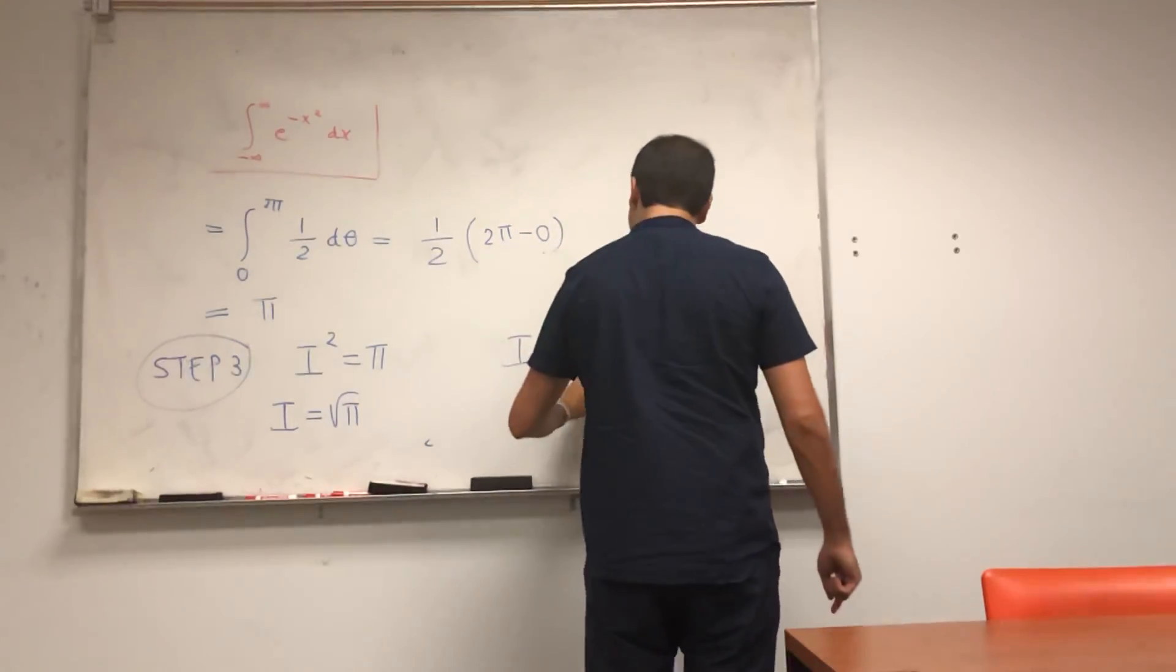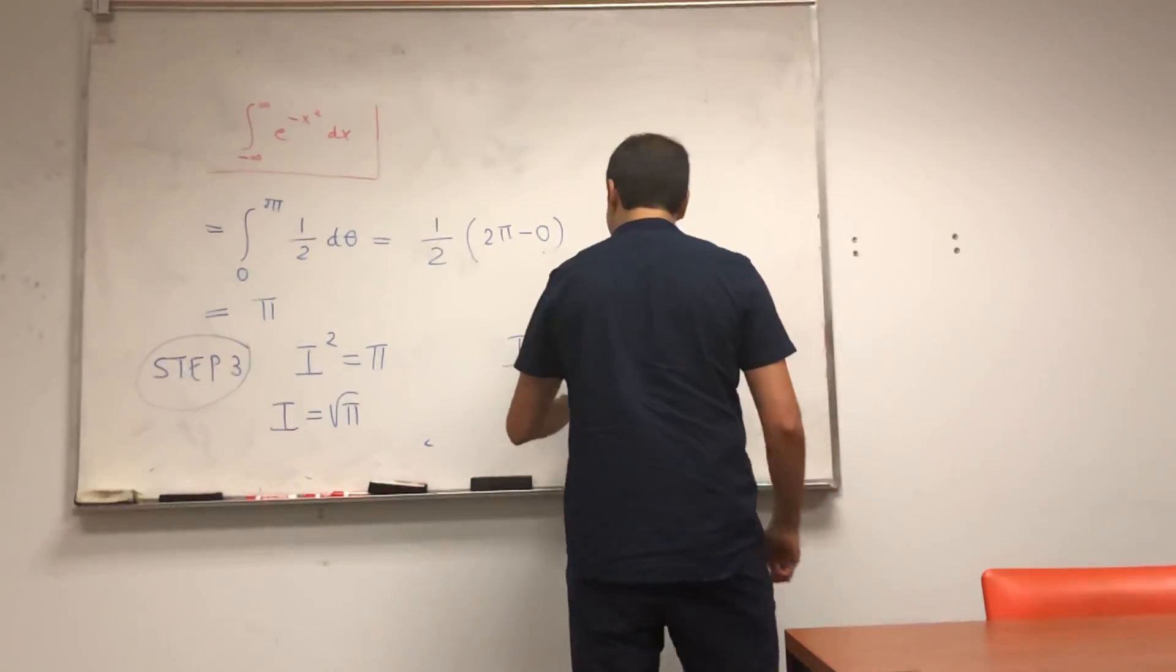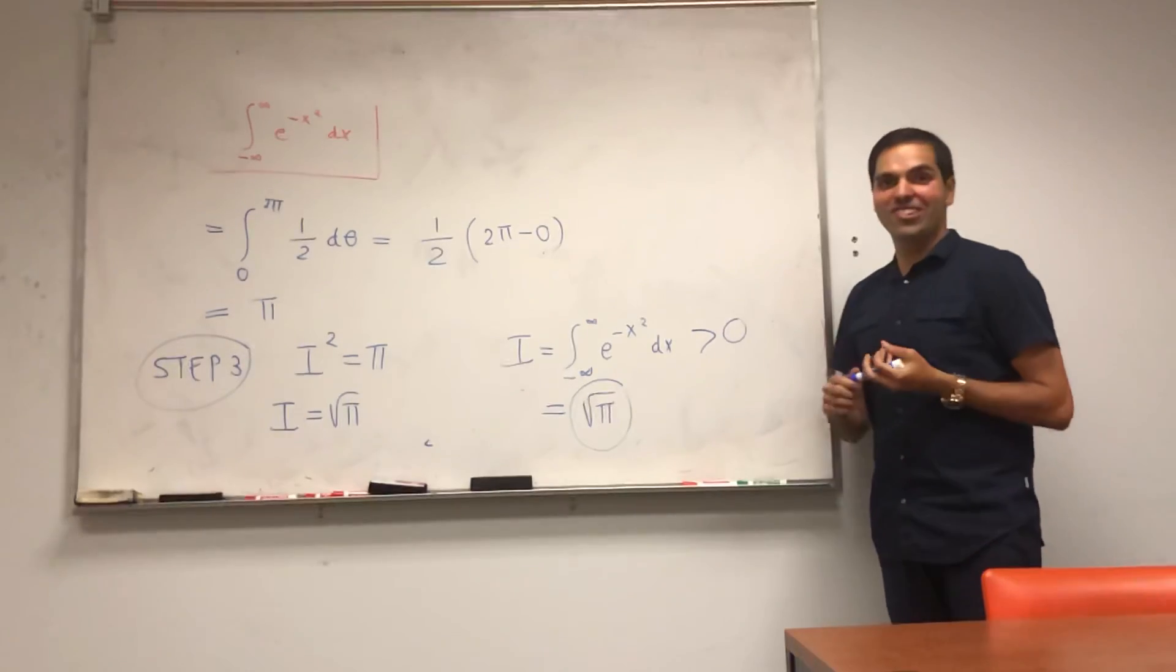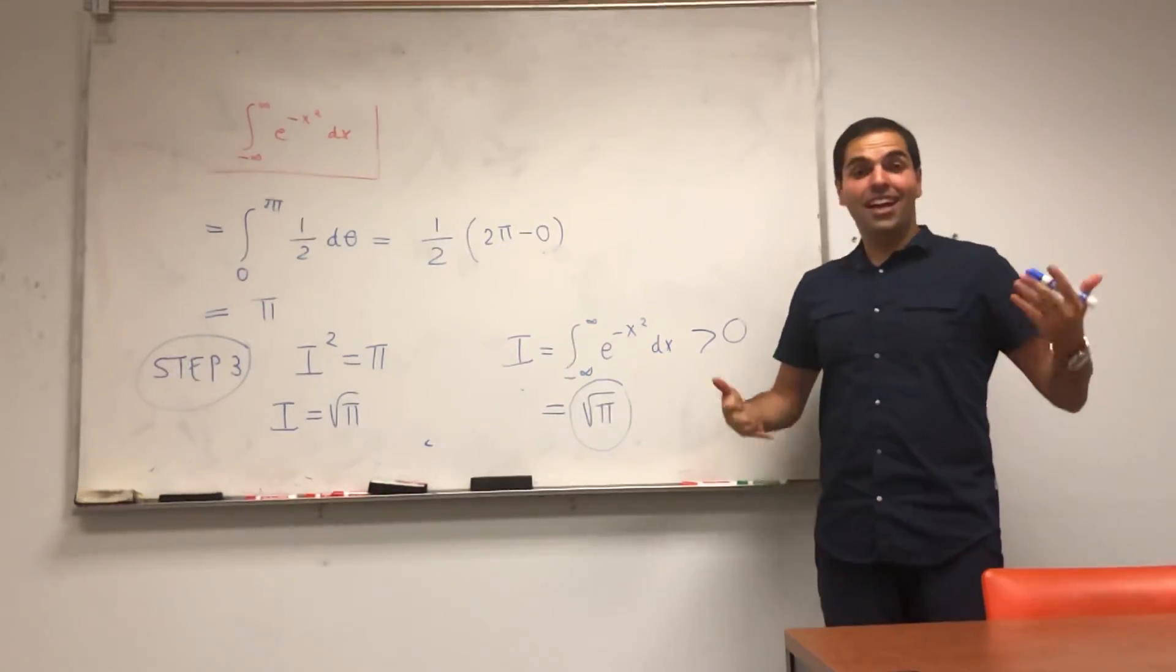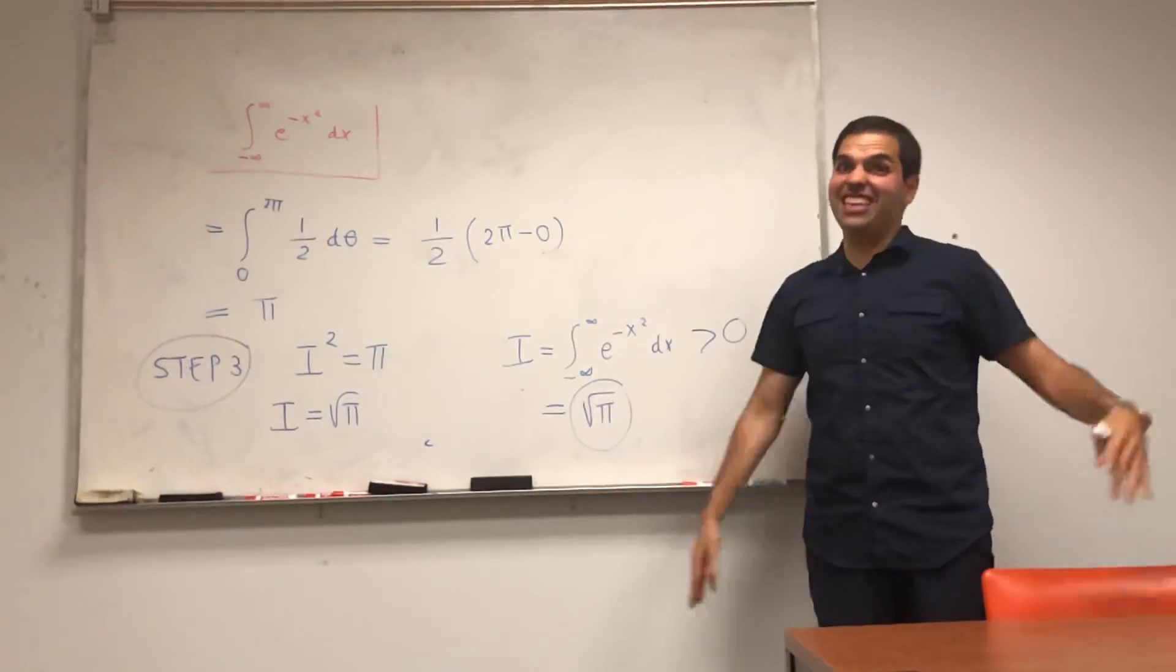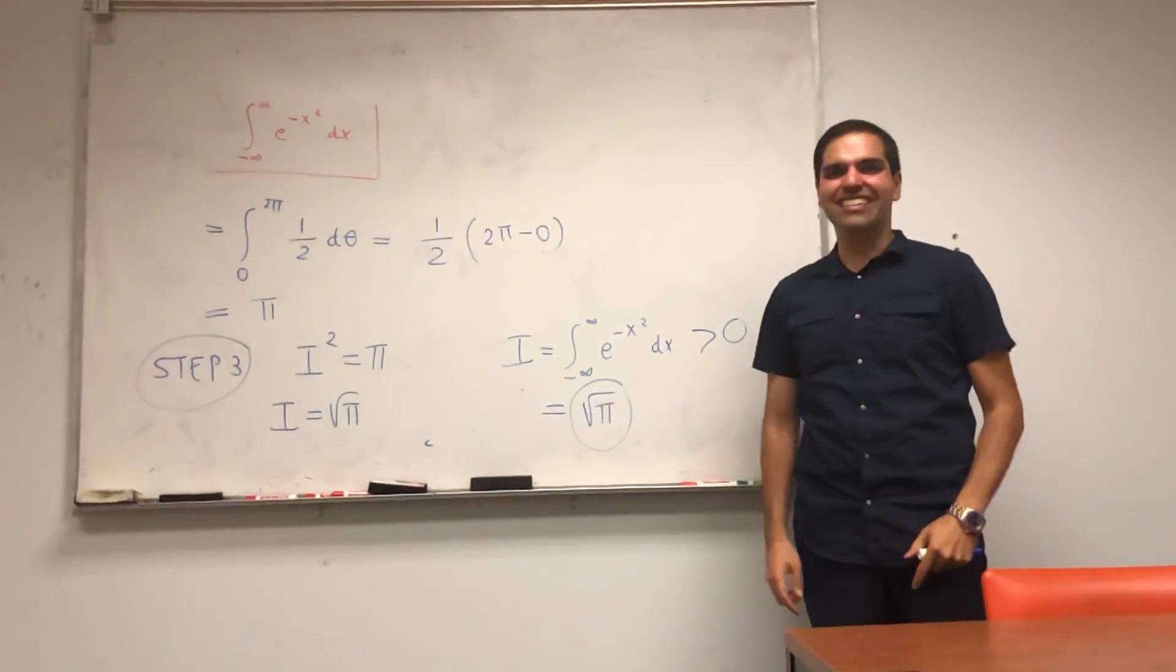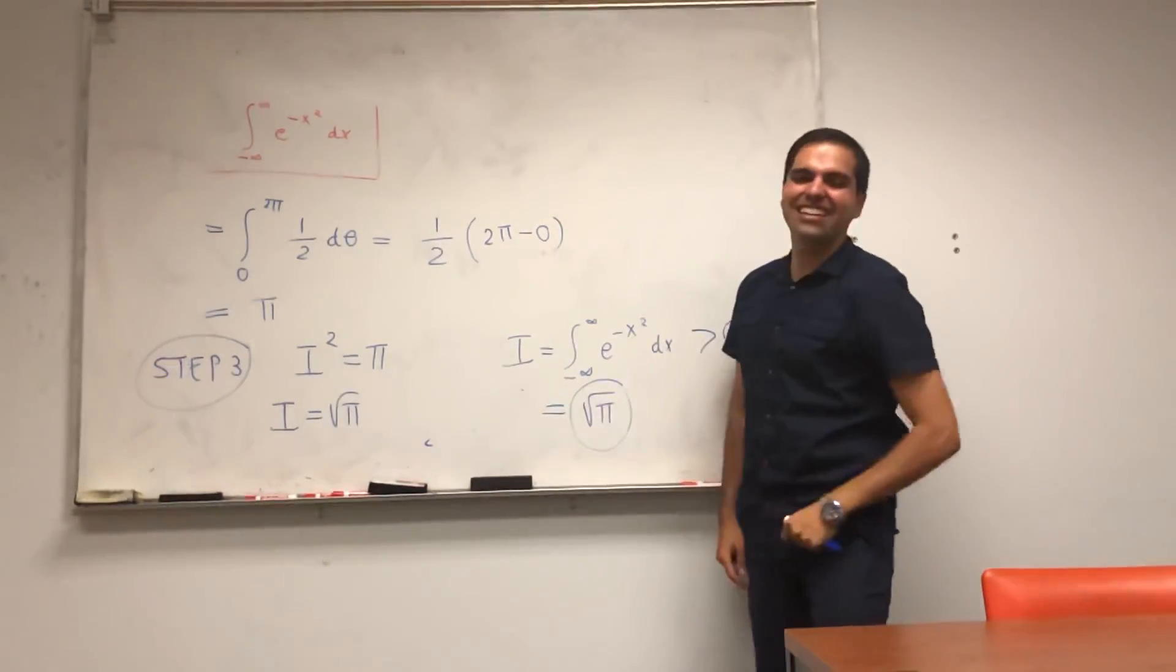And so this whole integral, which was impossible to calculate, is just √π. And you might say, oh my God, this is madness. No, it's not madness. It's multivariable calculus.